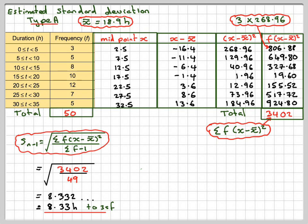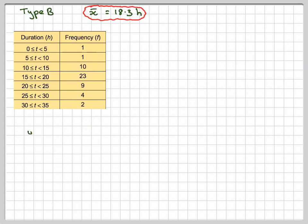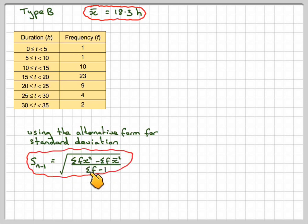We're going to use this alternative formula, which is the square root of (Σfx² - (Σfx)²/Σf) / (Σf - 1).